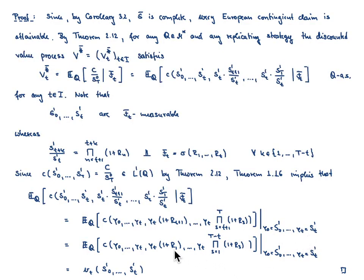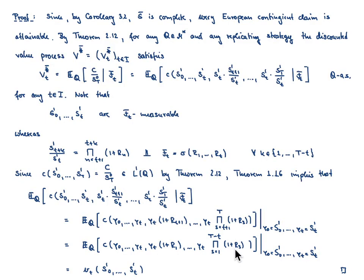By Theorem 1.16, the conditional expectation is given as the expected value of c(y_0,...,y_t, y_t·(1+r_{t+1}),..., y_t · ∏_{s=t+1}^{T}(1+r_s)), where we afterwards plug in y_0 = S_1^0,..., y_t = S_1^t. Since the random variables r_1,...,r_T are i.i.d. under Q, by the identical distribution property we can shift the indices, replacing r_{t+1},...,r_T by r_1,...,r_{T−t}. This gives us the expected value of c(y_0,...,y_t, y_t·(1+r_1),..., y_t·∏_{s=1}^{T-t}(1+r_s)), which is precisely the definition of our function v_t, concluding the proof.